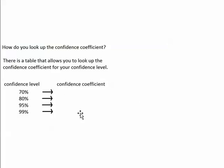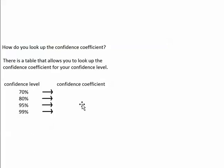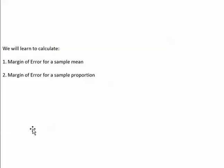The confidence coefficient that you pick from the table actually determines which margin of error you will calculate. If you pick the confidence coefficient for the 95% confidence level and plug that into the formula, you'll get the 95% margin of error. Now let's go through a few examples of calculating the margin of error — specifically, we'll look at an example of the margin of error for a sample mean.